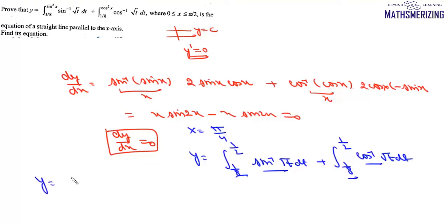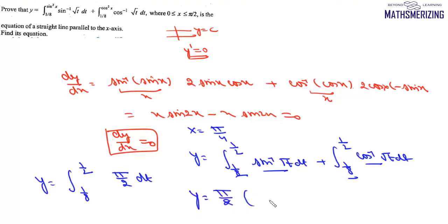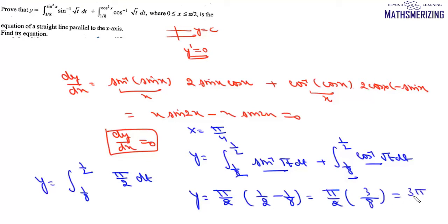Now the limits are the same, and sin⁻¹x + cos⁻¹x = π/2. So we'll write y equals this integral from 1/8 to 1/2 of π/2 dt. So we'll get y as π/2 into (1/2 minus 1/8), which gives π/2 into 3/8, so the value of this integral will be 3π/16. Therefore the equation of this line will be y = 3π/16.